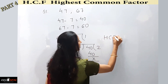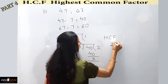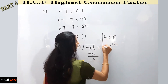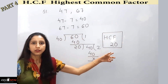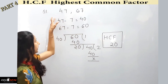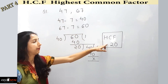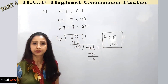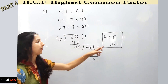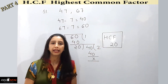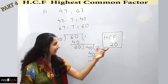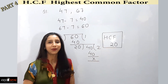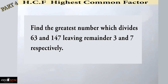The divisor of the last step becomes the HCF, so the highest common factor is 20. We can verify: when 47 is divided by 20, the remainder is 7, and when 67 is divided by 20, the remainder is again 7. So 20 is the correct answer.